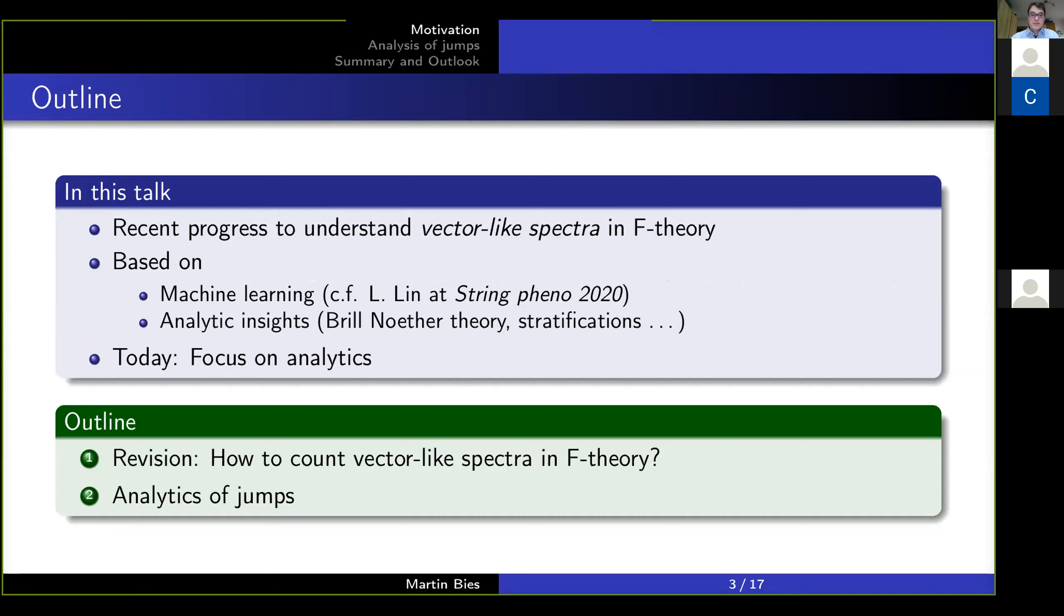The second aspect is from analytic insights, which come from Brill-Noether theory, stratifications, understanding how curve-splitting changes the vector-like spectrum, and that is what I will talk about today. So our outline is: I first do a very brief revision on how we count vector-like spectra in F-theory, and then I will talk about how we understand the vector-like spectra from these analytics insights.